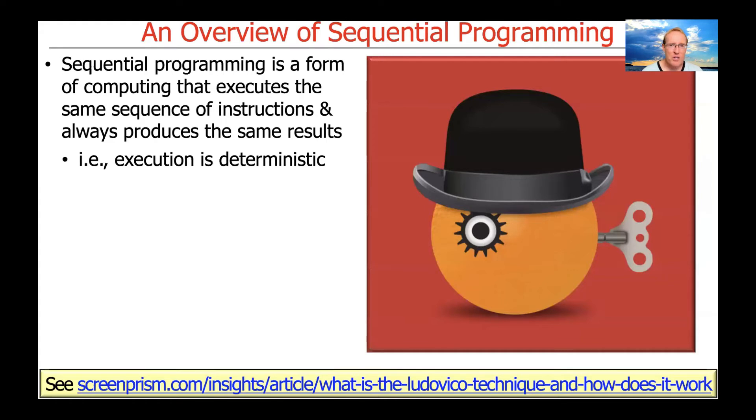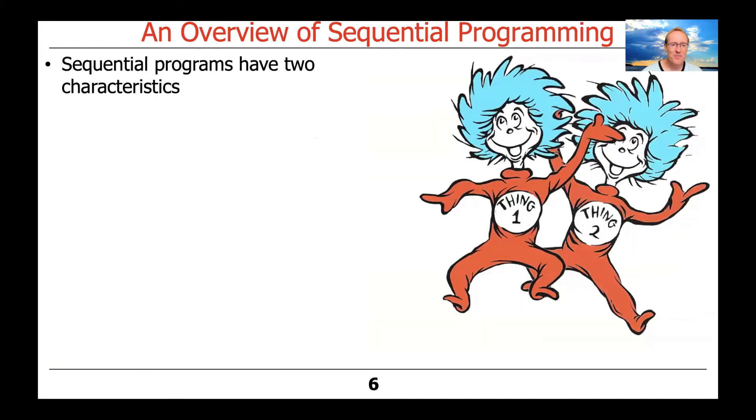One of the characteristics of sequential programming is that the program's behavior is deterministic. That means it's always going to perform the same for a given set of input. A sequential program will always do things in a particular order at a particular time to produce a particular result. So there's not a lot of guesswork going on there.